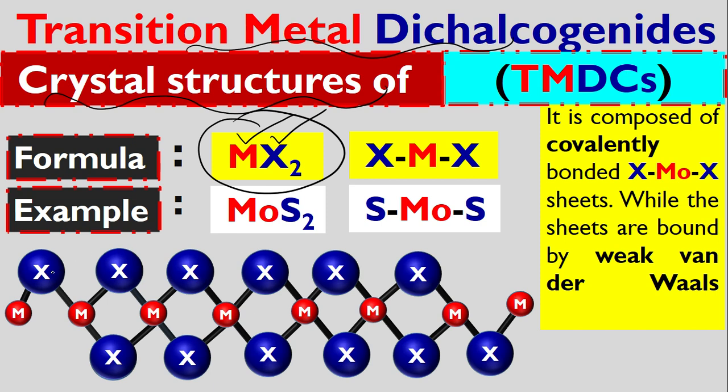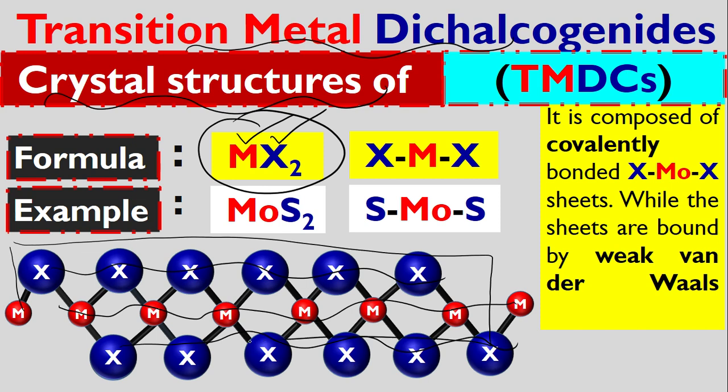Look at the structure: these are X chalcogen atoms, this is also chalcogen atoms, and between these two atoms there is a transition metal atom. They make a 2D layer here—three atoms make a 2D layer. All these atoms are bonded with each other with covalent bonds, and this covalent bond is a very strong bond.